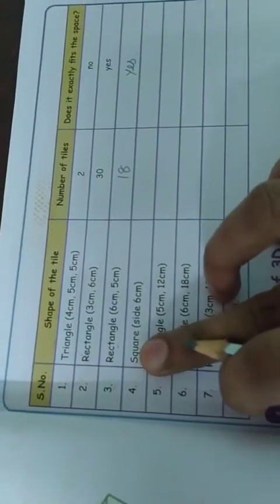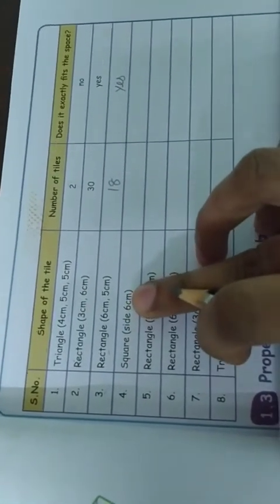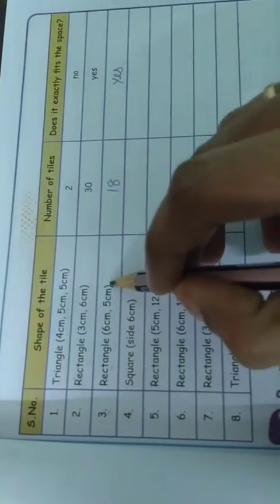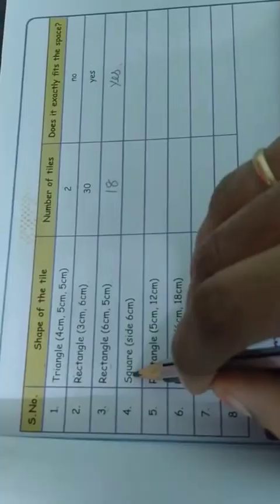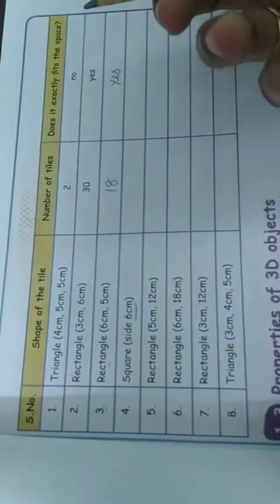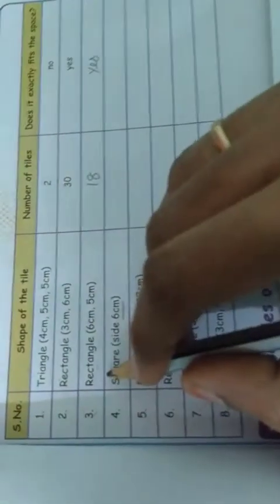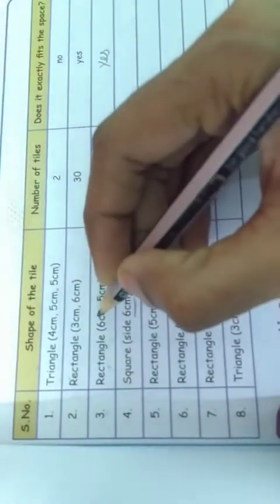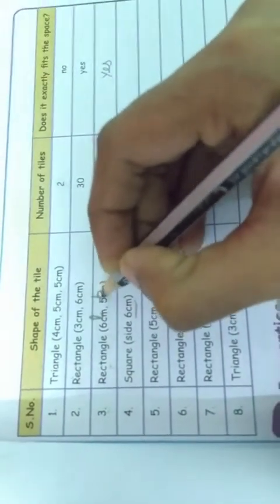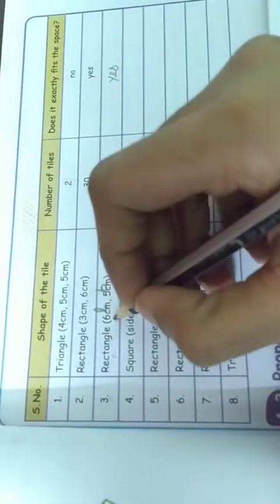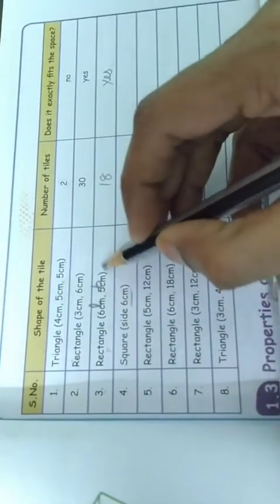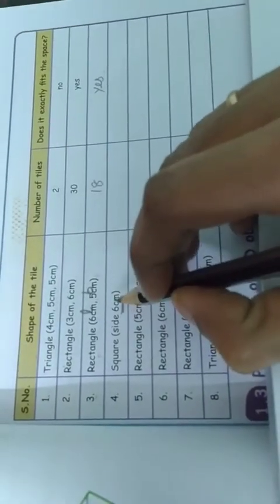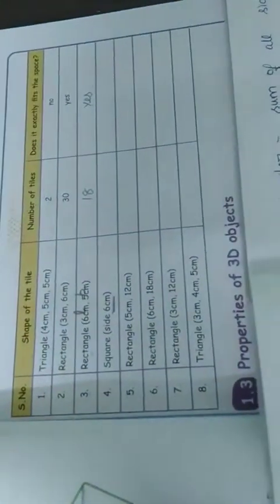Fourth question: square, side 6 cm. In a rectangle, they give 2 measurements, but in a square they give only 1. Why? Because in a rectangle, only opposite sides are equal, so we need 2 measurements. But in a square, all sides are equal, so all sides are 6 cm only.